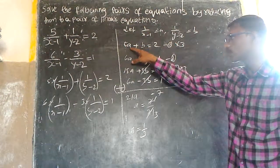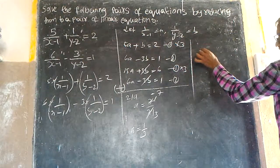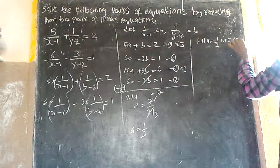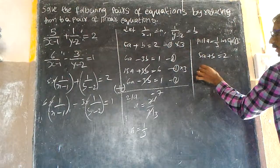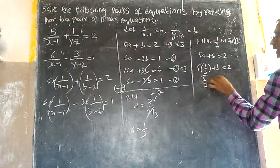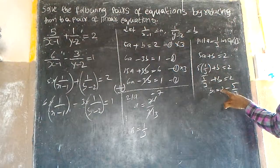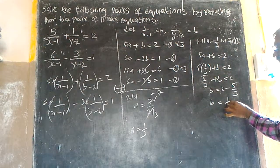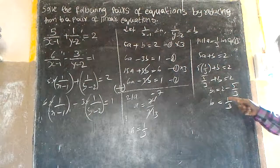Now substituting a is equal to 1 by 3 into equation 1: 5 into (1 by 3) plus b is equal to 2. So 5 by 3 plus b equals 2, which means b is equal to 2 minus 5 by 3, that is 6 by 3 minus 5 by 3, giving b is equal to 1 by 3.